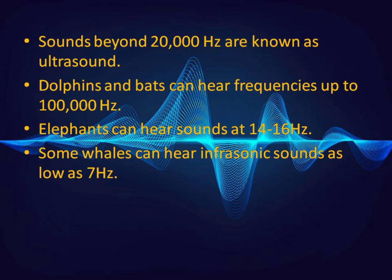Sounds above 20,000 Hz are beyond the range of human beings, and such sounds are known as ultrasound. Several animal species are able to hear frequencies well beyond the human hearing range. Some dolphins and bats can hear frequencies up to 100,000 Hz. Elephants can hear sounds at 14–16 Hz, while some whales can hear infrasonic sounds as low as 7 Hz.